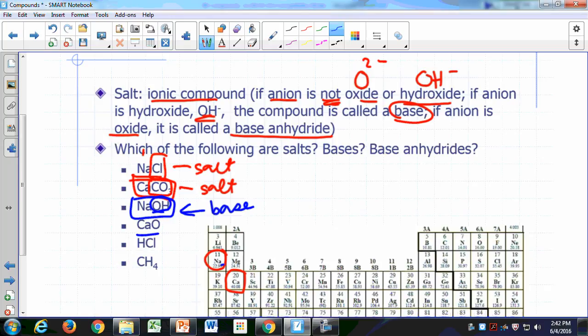And what about calcium oxide? This is a base anhydride, it's an oxide. Ionic oxide.